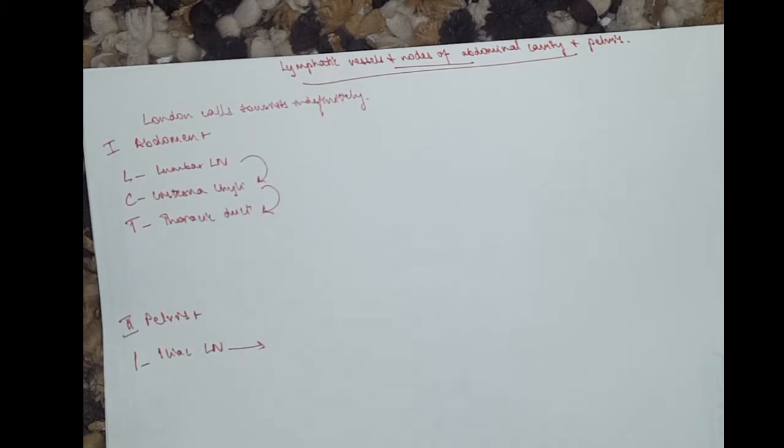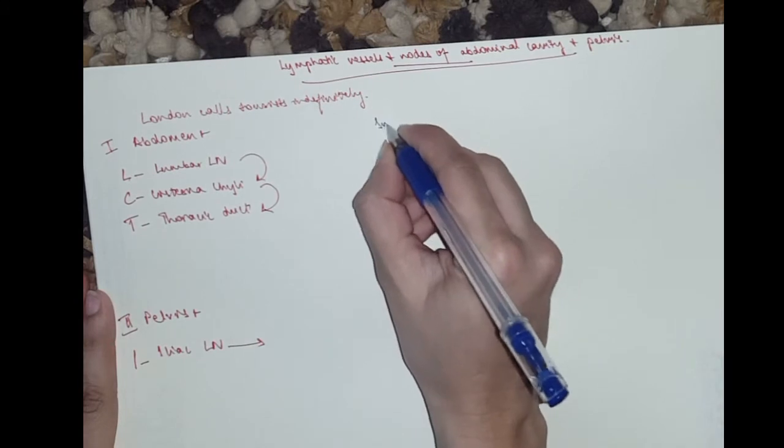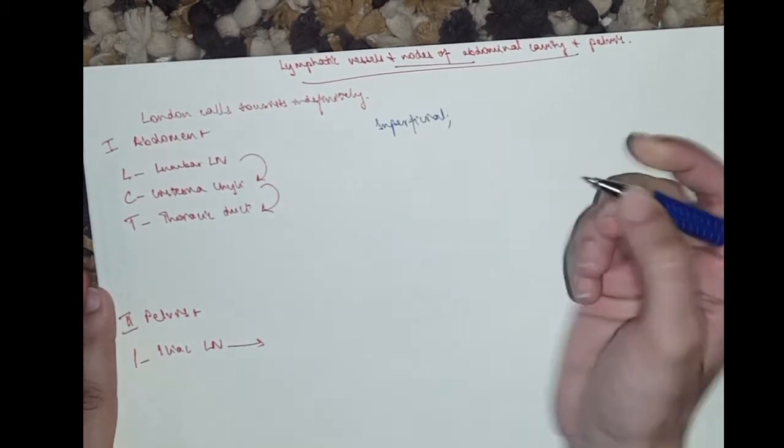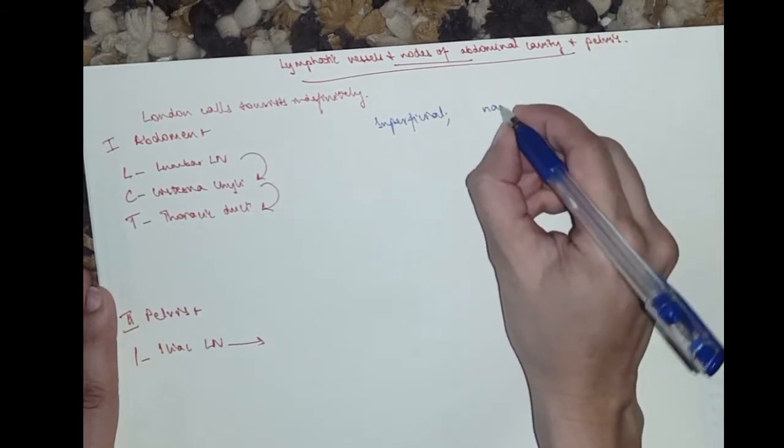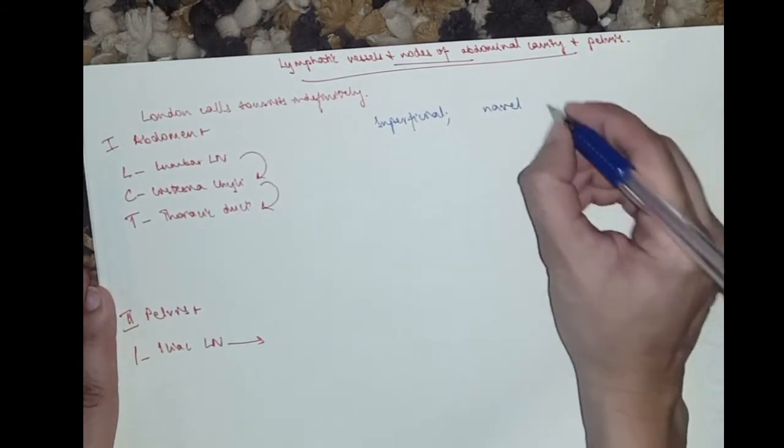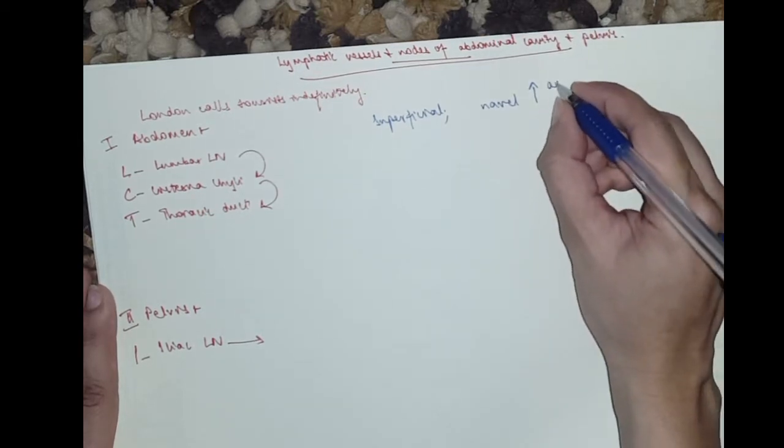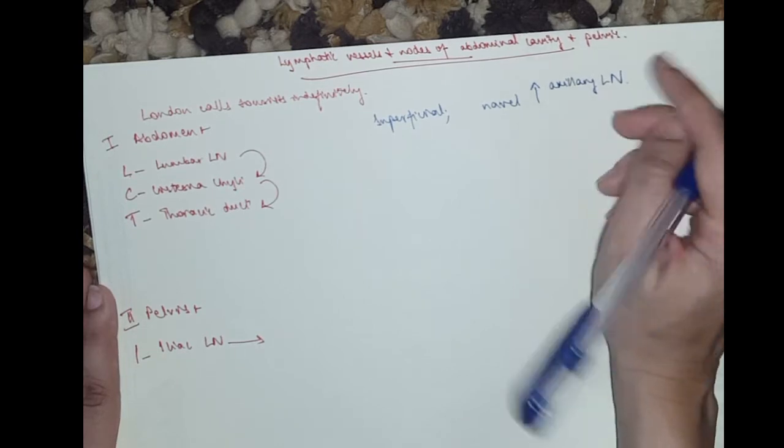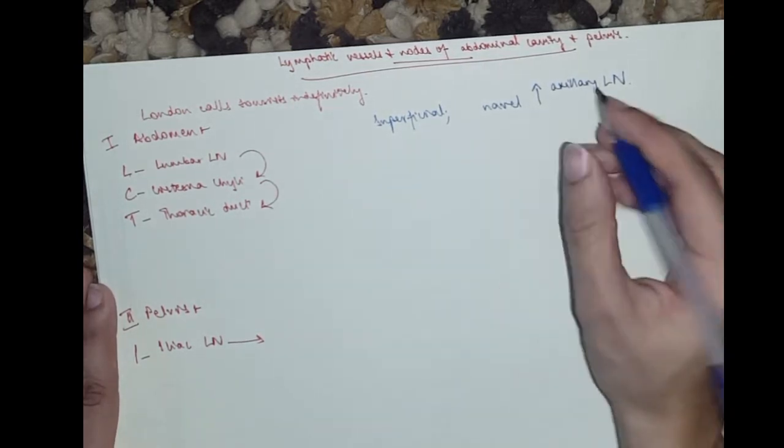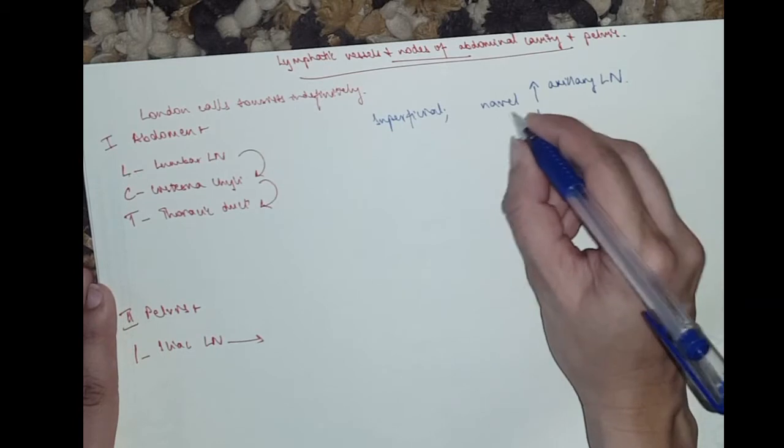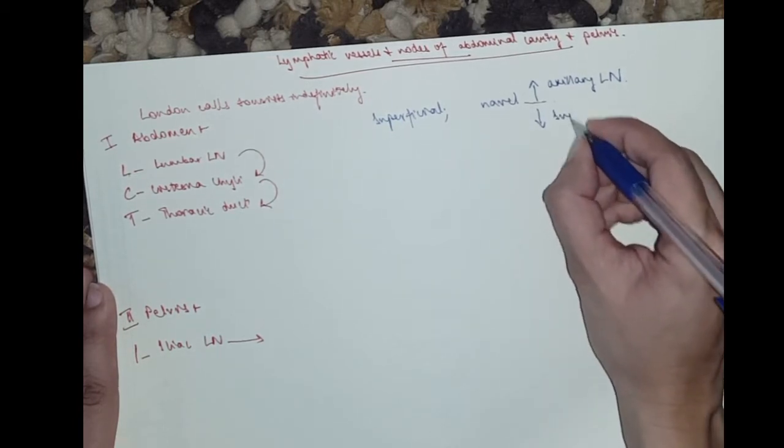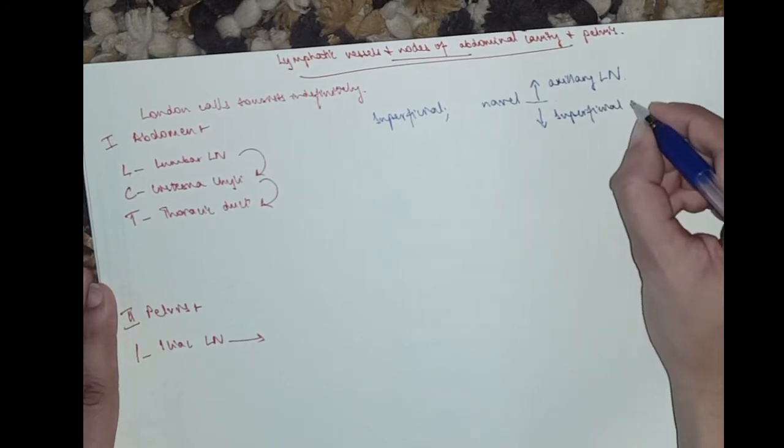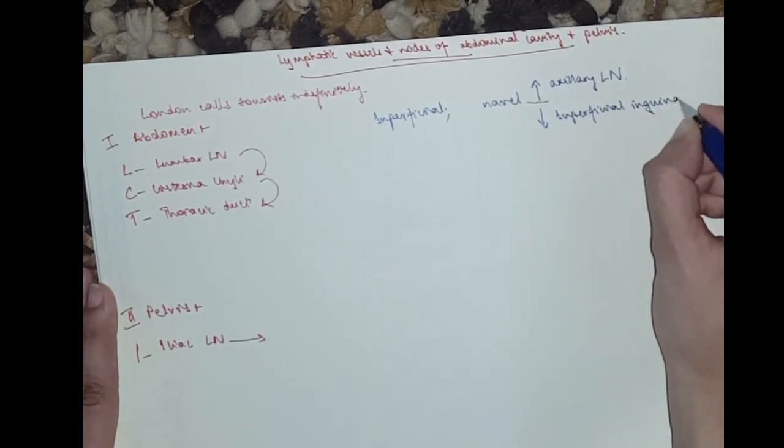So again we've got superficial and deep. The superficial one, you know, the navel. So navel or the umbilicus. Above the navel, it drains into the axillary lymph nodes, which I mentioned in the upper extremity video, and below the navel, it drains into the superficial inguinal lymph node.